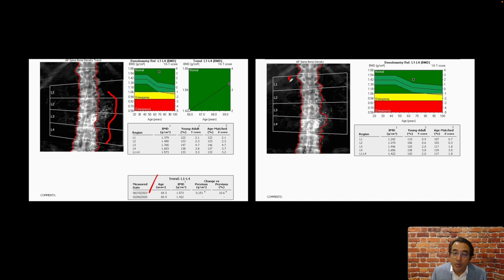On this prior study, this vertebral body is labeled as L1, and so it should have been this vertebral body on the current scan that should have been labeled as L1. So we want to be very careful when the comparisons are made that the same vertebral bodies are identified and labeled between the prior and the current studies.